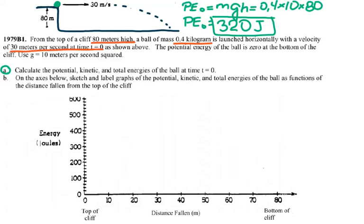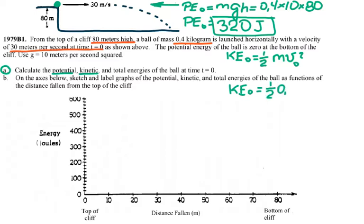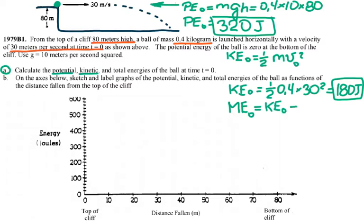That's the potential energy at the beginning. Now for kinetic energy: KE initial equals one-half mv squared. The initial velocity is 30 meters per second, so plugging in 0.4 times 30 squared gives 180 joules. Mechanical energy is the total energy — potential plus kinetic — so 180 plus 320 equals 500 joules total mechanical energy.